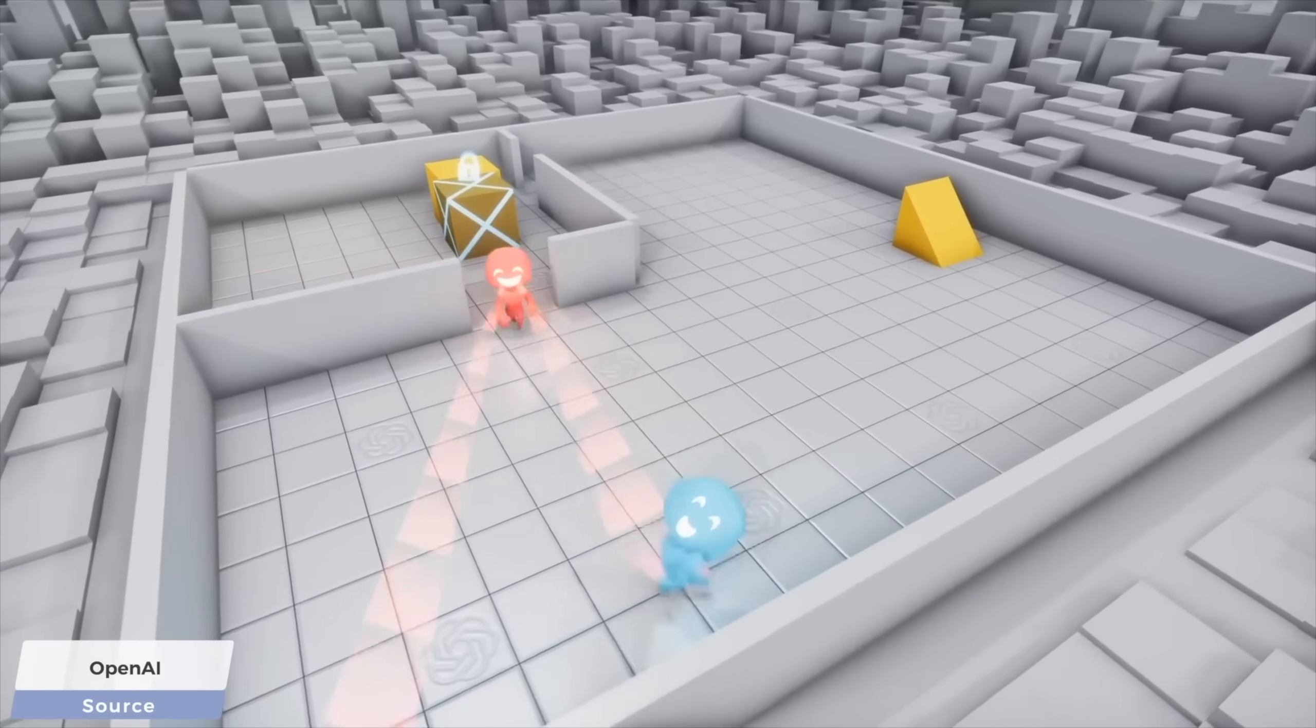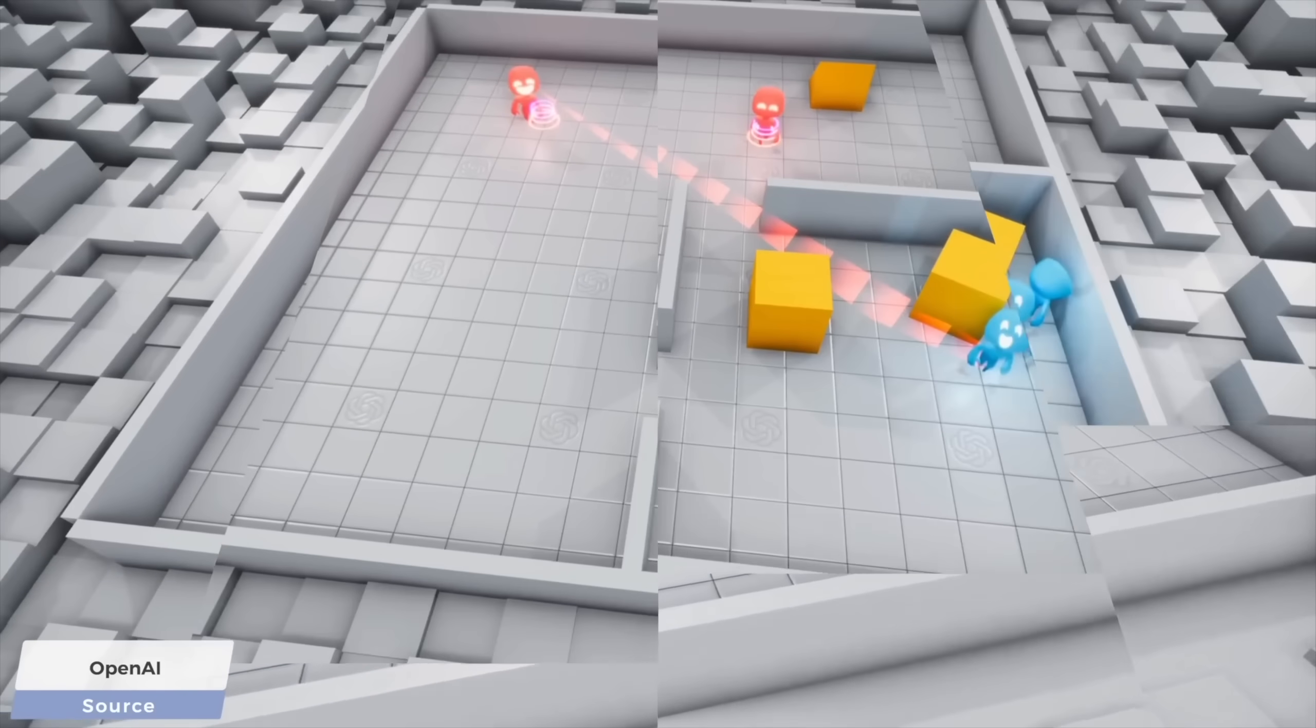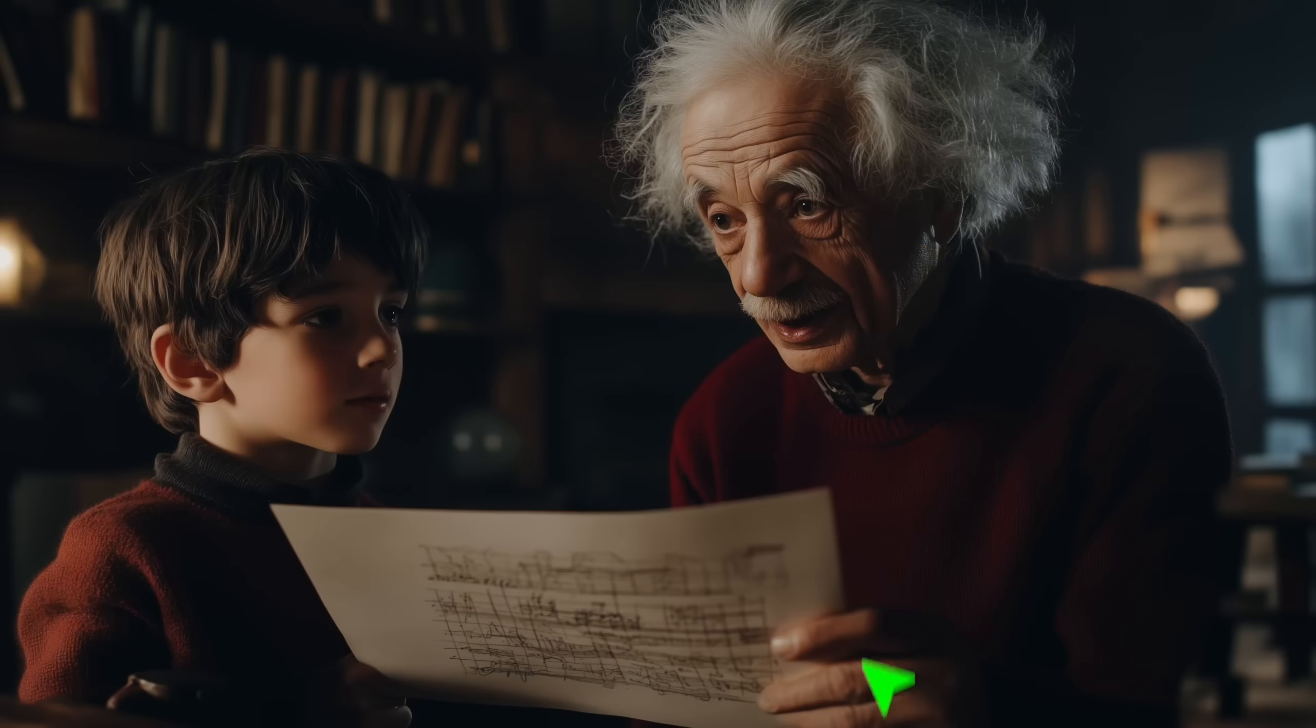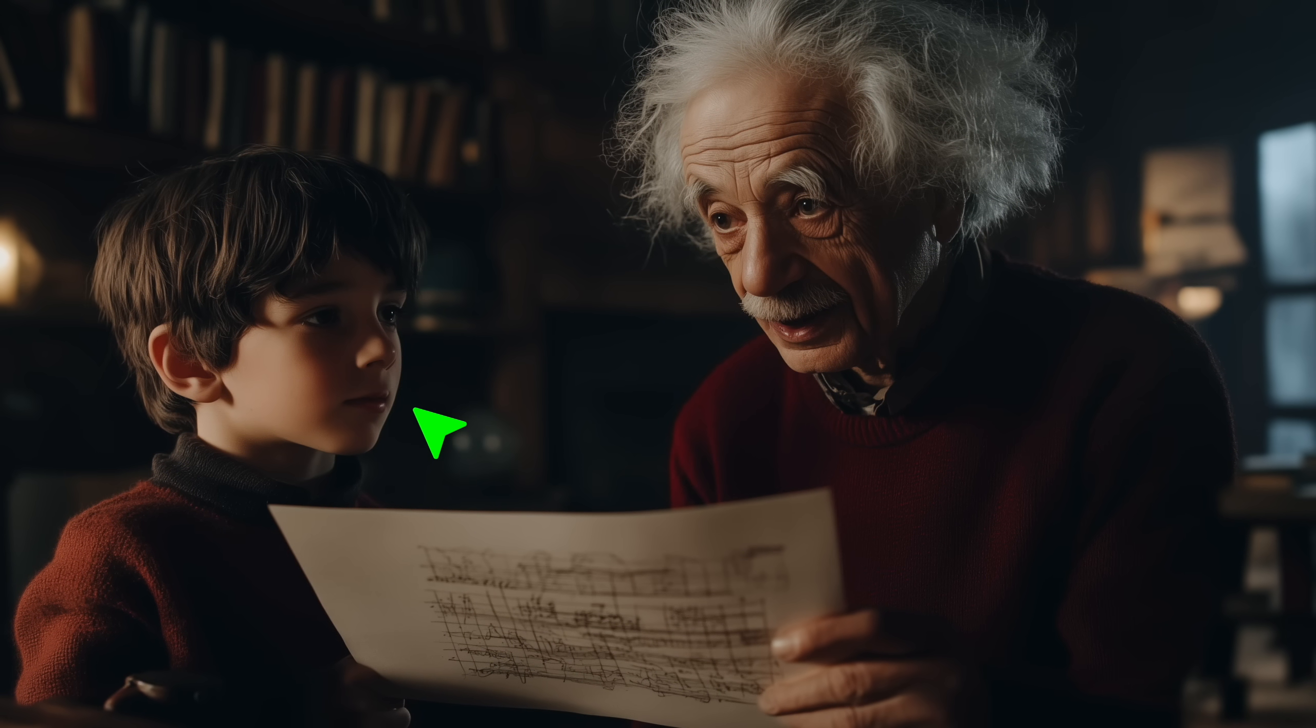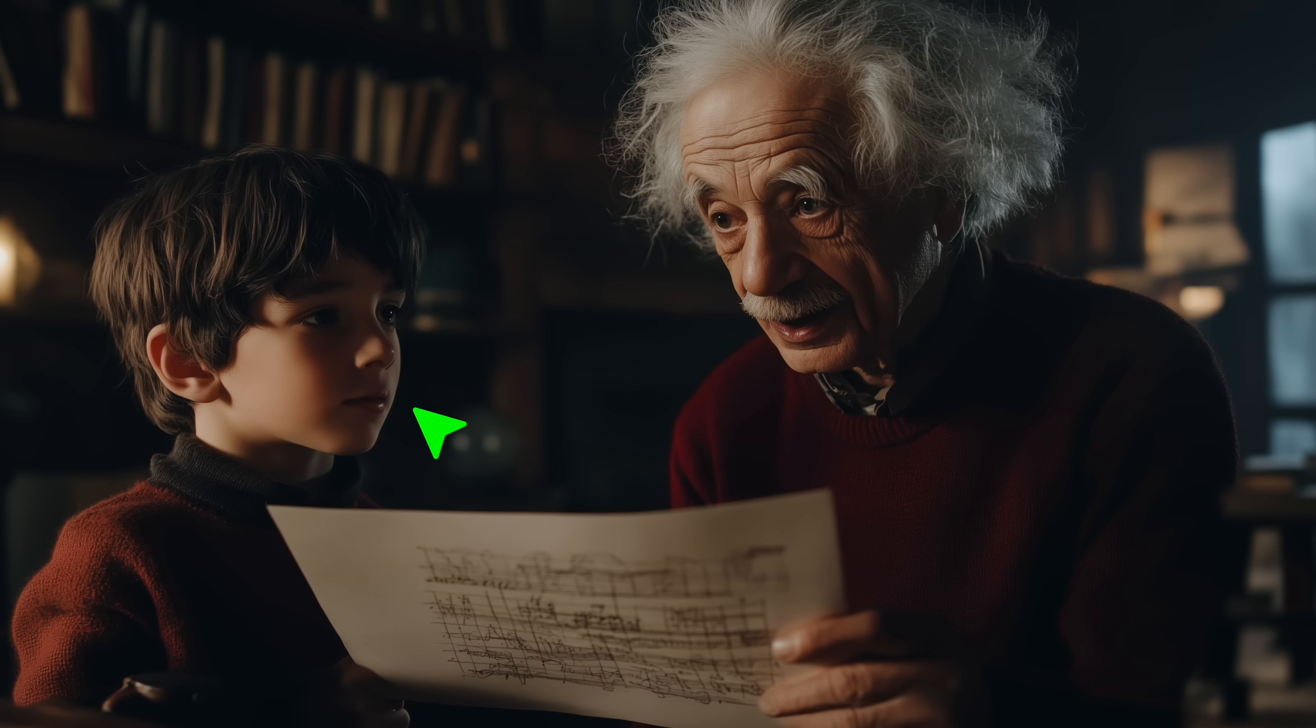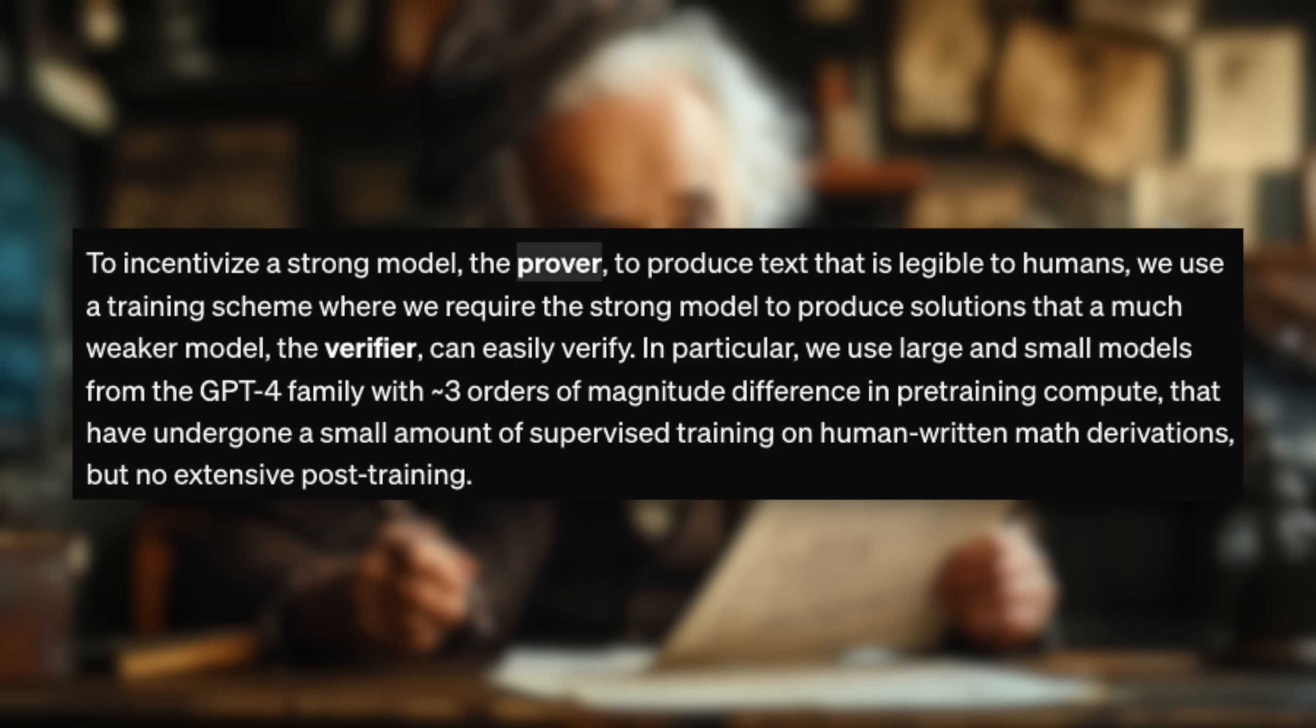This game requires not hiders and seekers. This game requires Einstein and a kid. Yes, you heard it right. The prover model will be Einstein. This is the one that can solve difficult problems, however, the goal is to hand it over to the verifier, the kid, if you will.